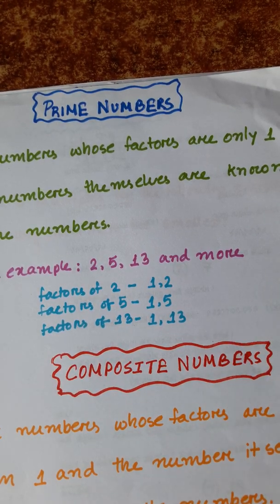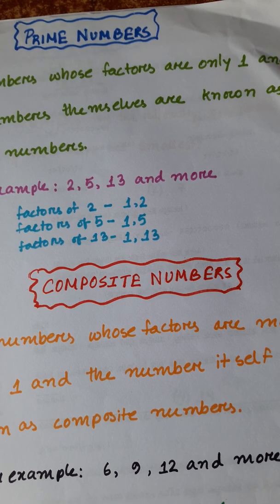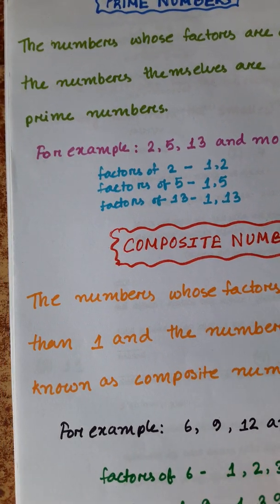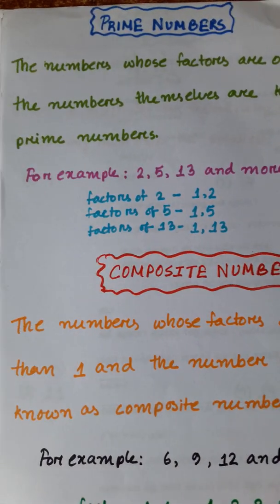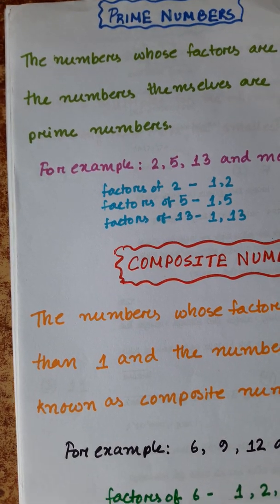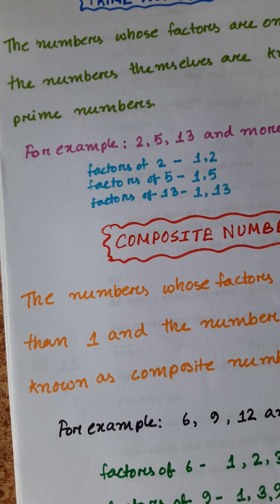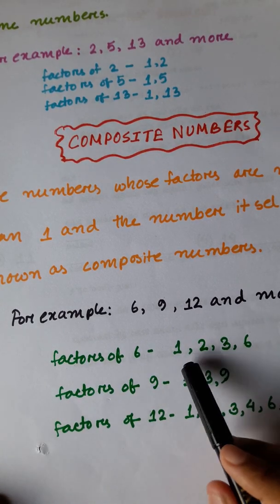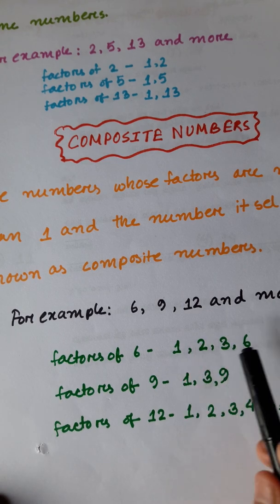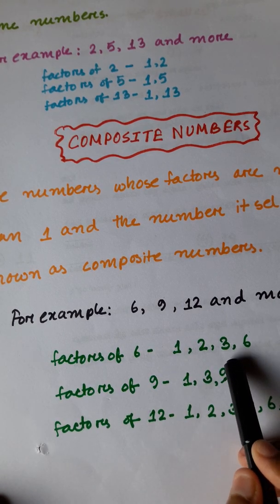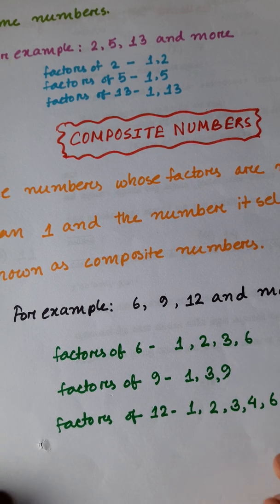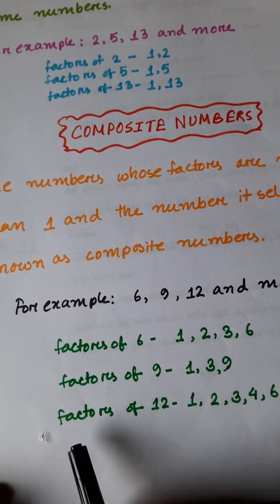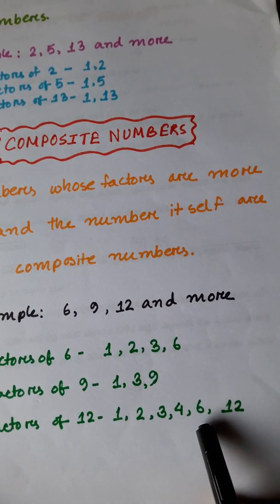Composite numbers — the numbers whose factors are more than just 1 and the number itself are known as composite numbers. For example: 6, 9, and 12. The factors of 6 are 1, 2, 3, and 6. The factors of 9 are 1, 3, and 9. The factors of 12 are 1, 2, 3, 4, 6, and 12.